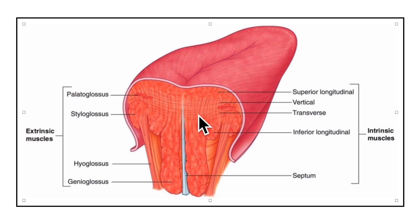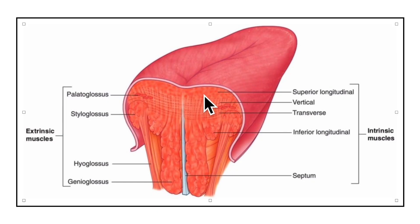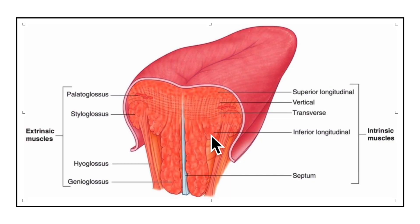The superior longitudinal muscle arises from the fibrous tissue deep to the mucous membrane on the dorsum of the tongue and the middle lingual septum. They pass longitudinally backwards from the tip of the tongue to its root. Its action is to elevate the tip and sides of the tongue superiorly, shape the tongue dorsum into a concavity, and shorten the tongue. The inferior longitudinal muscle originates from the fibrous tissue beneath the mucous membrane, stretching from the tip longitudinally back into the root. Its action is to curl the tip of the tongue inferiorly, making the dorsum convex and shortening the tongue.